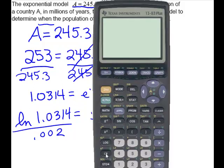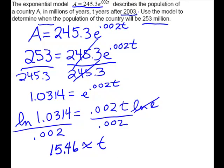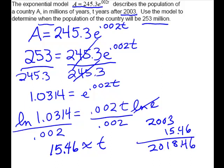So we're going to take the natural log of 1.0314. Make sure you close the parentheses for your log, divided by .002, enter. We get 15.46 if we go to two places. So we have to add that back to 2003. So we have 2003 plus 15.46 is 2018.46, and the rest of the question says round to the nearest year as needed. So to the nearest year is going to be the whole number, and so the 4.6 will drop off. So to the nearest year is 2018.